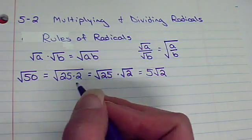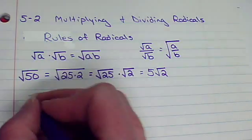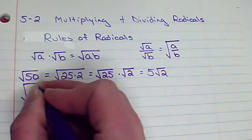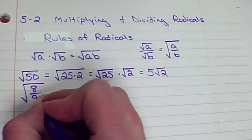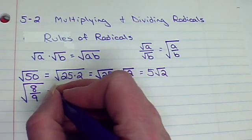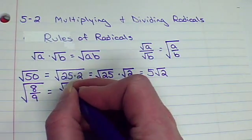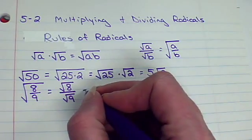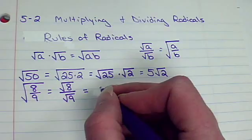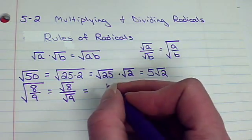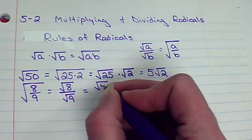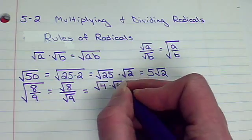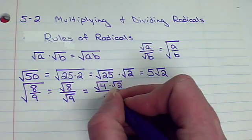The same thing holds true for division. If we had the square root of 8 over 9, to simplify that, we're going to break it down. That would be the square root of 8 over the square root of 9. I can rewrite 8 as 4 and 2. So, why don't I break that down into the square root of 4 times the square root of 2 over the square root of 9.